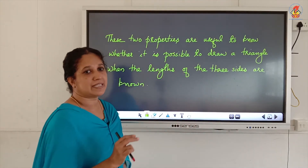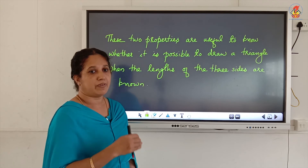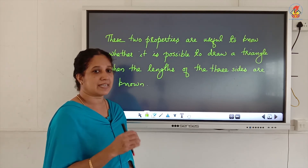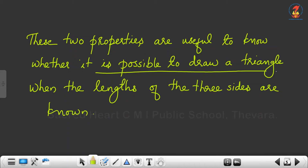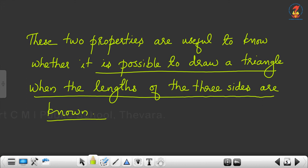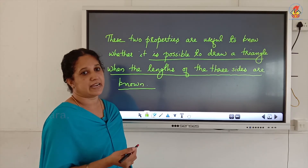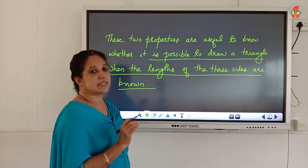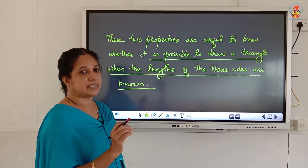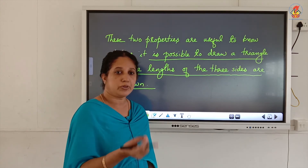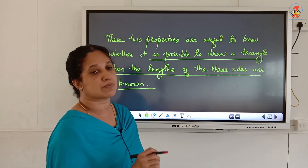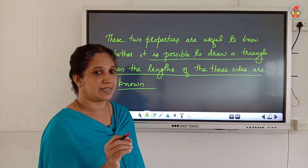We have learned two properties regarding the length of the sides. The first is finding the sum, and the second is finding the difference. Both properties are useful to know whether it is possible to draw a triangle when the lengths of the three sides are known. When checking, you can use either one — the sum of any two sides should be greater than the third side, or the difference between any two sides should be smaller than the third side.